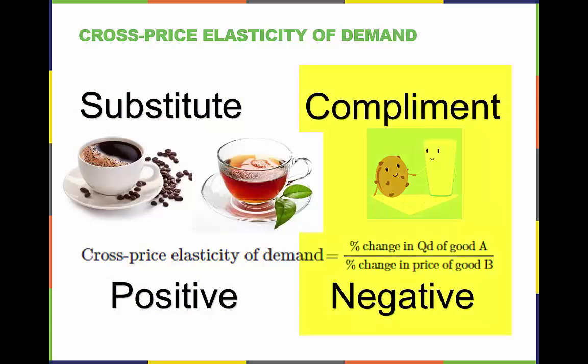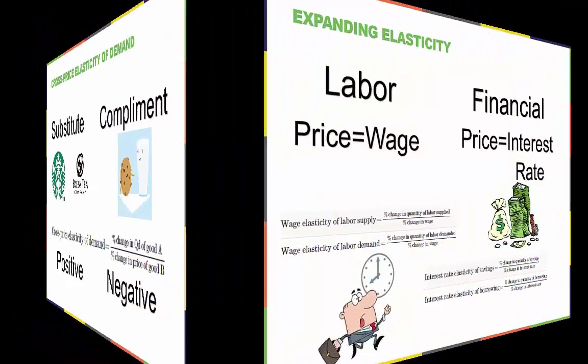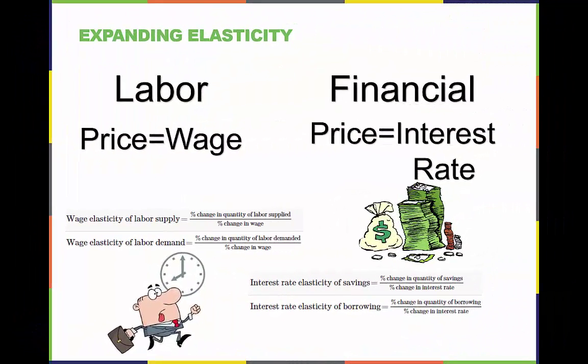Complement goods have a negative cross price elasticity. If good A is a complement for good B, like milk and cookies, then a higher price for B will mean a lower quantity consumed of A. We can connect the concept of elasticity with the labor and financial markets that we discussed in Chapter 4.